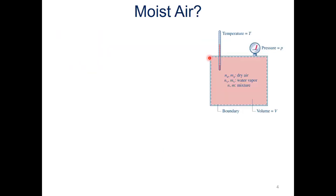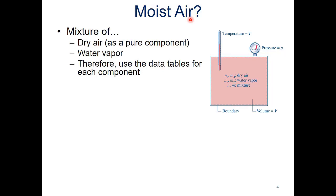So what is this air we're talking about? Specifically, we're going to look at moist air. What that is: we have different components of a mixture of air — obviously the dry air, which is a pure component, so we can go to table A22 and look at using those air values when we do our calculations. The second component is water vapor, also a pure component. We have some mass of dry air and some mass of water vapor, and those combine to create our moist air.